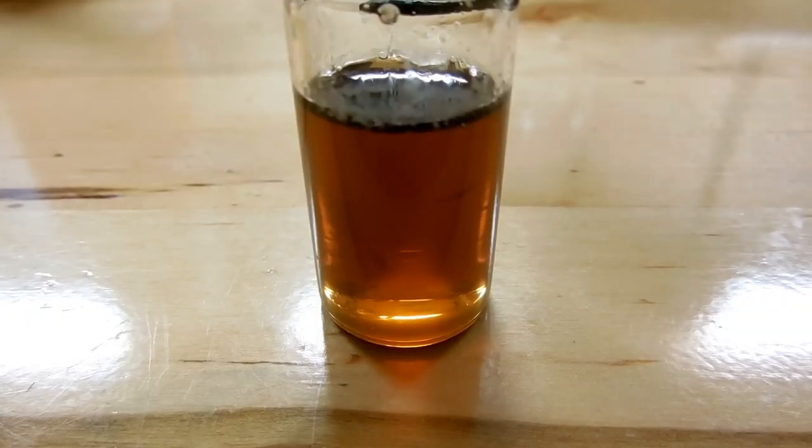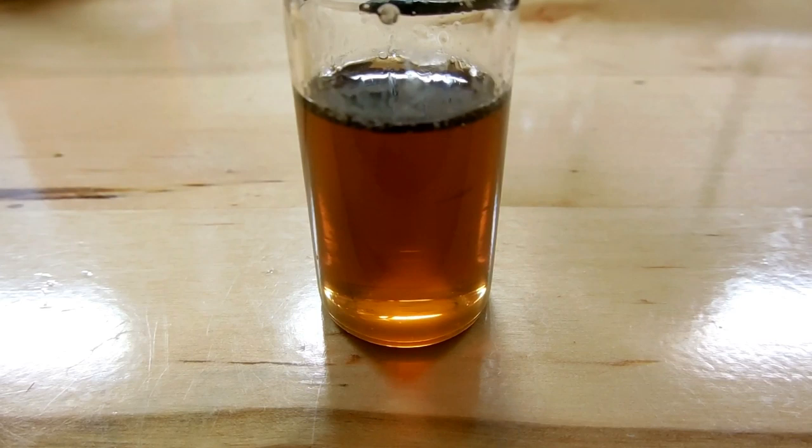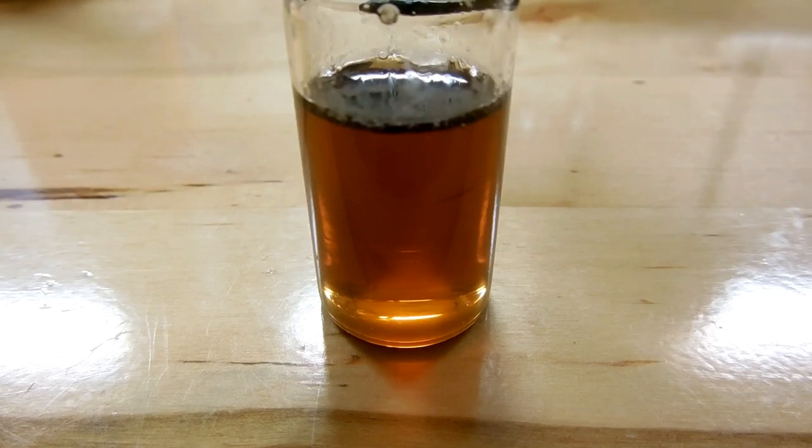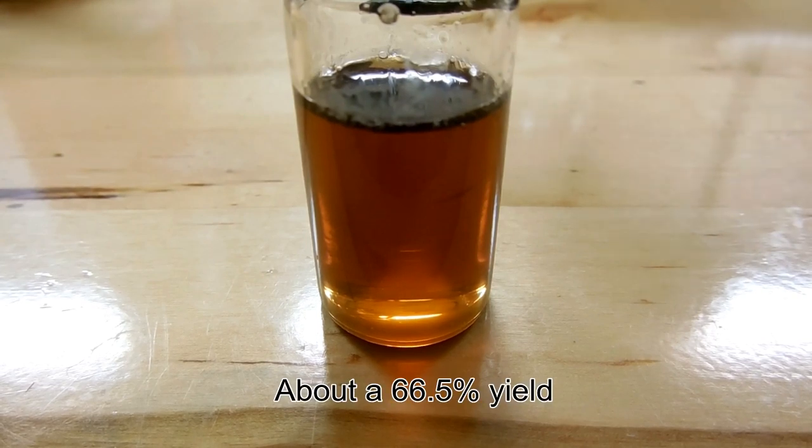So here's my product: 6.3 milliliters of methyl salicylate or oil of wintergreen. That's 7.3 grams. Theoretically the maximum we could have achieved is 9.3 milliliters or about 11 grams, but of course everything's going to be a little bit less than that in practice.